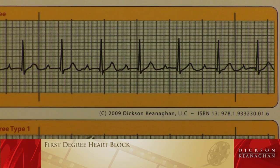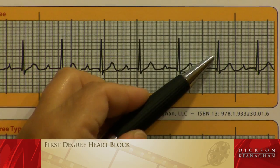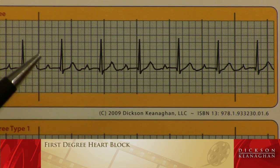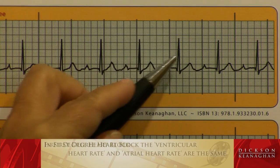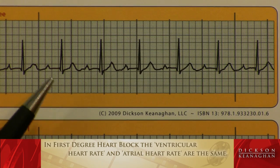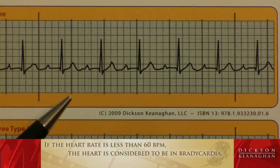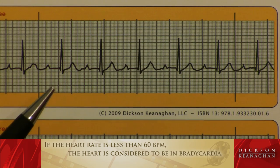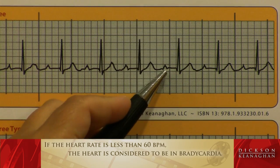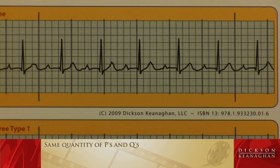The first thing I'd like to do is get the patient's heart rate. If I count the QRS complexes within this six-second strip and multiply by 10, I'll have a ventricular heart rate. Counting them: one, two, three, four, five — multiply five by ten, I have 50. The ventricular heart rate is 50. If the heart rate is less than 60, it is considered bradycardia. I'll also count the P waves for the atrial rate: one, two, three, four, five. The atrial rate is also 50. So there is the same number of P's as Q's in the first degree heart block.